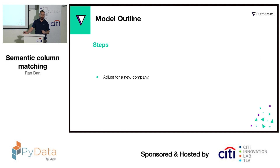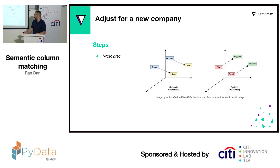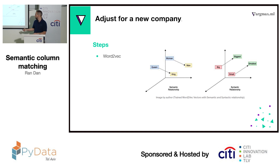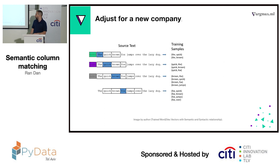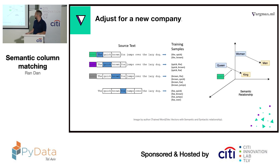The next step is to adjust the model for new companies. We forced the company name into the sentences, so now I can use the company name as a vector. And I can basically move the solution from one company to another company using vector operations.